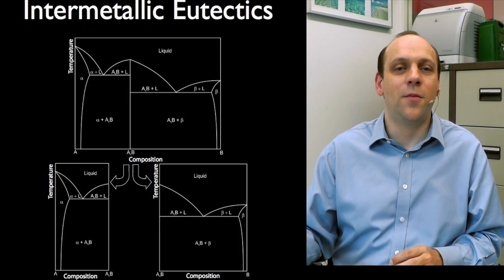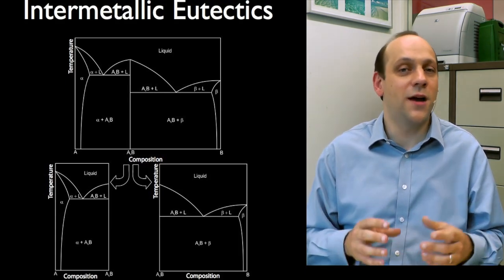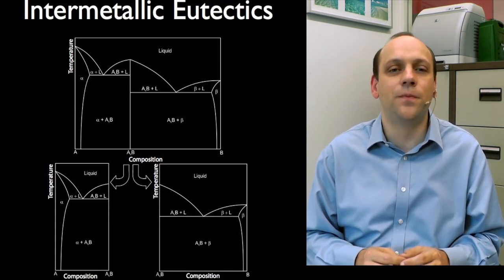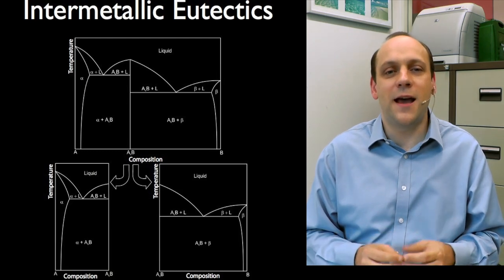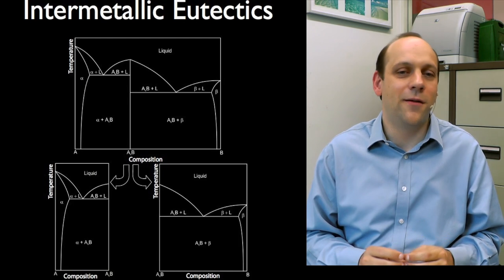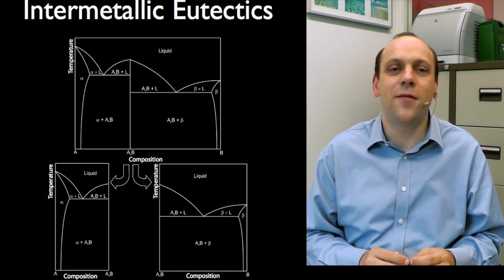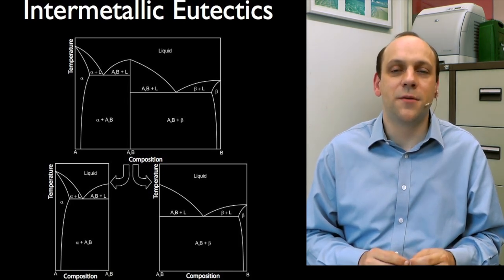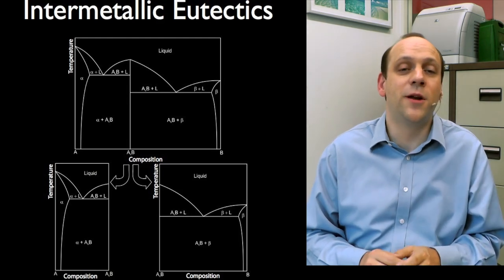Many phase diagrams, however, are more complicated because we have intermetallic compounds we can form. So say we had an A_X B. X could be one, two, three, four, whatever you like. It looks like about A to B in this diagram. So we could have a compound in between where we could form an intermetallic.